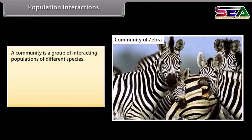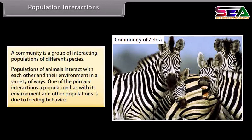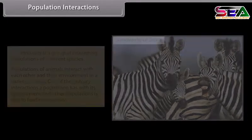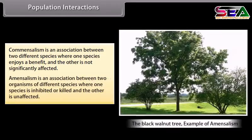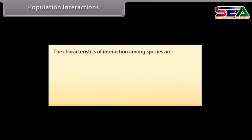A community is a group of interacting populations of different species. Populations of animals interact with each other and their environment in a variety of ways. One of the primary interactions a population has with its environment and other populations is due to feeding behaviour. The characteristics of interaction among species are: predation, competition, parasitism, commensalism, and mutualism.